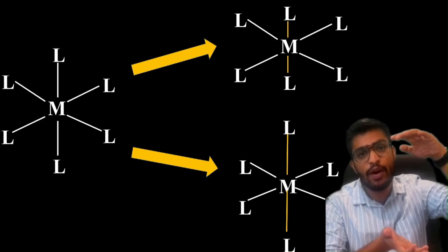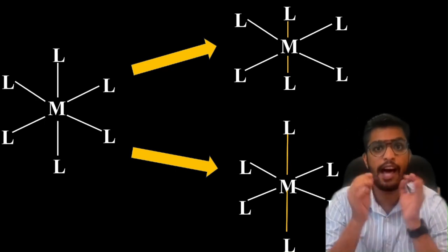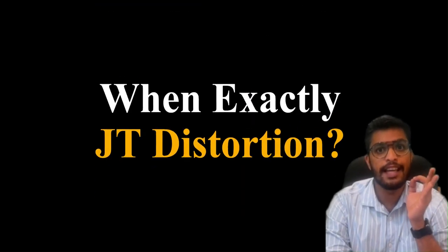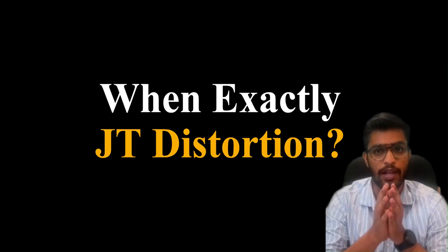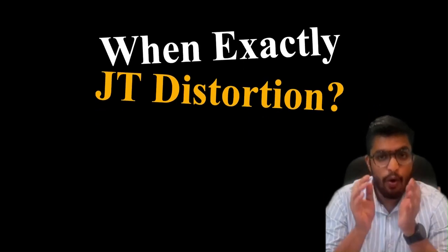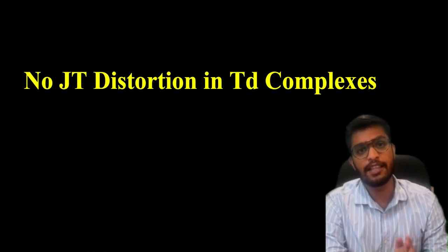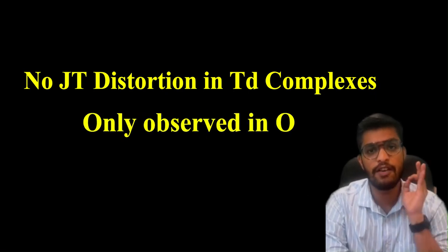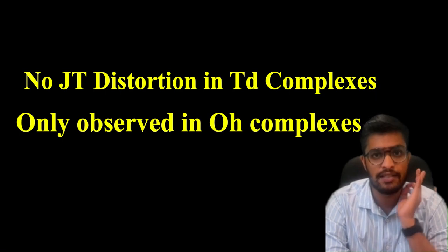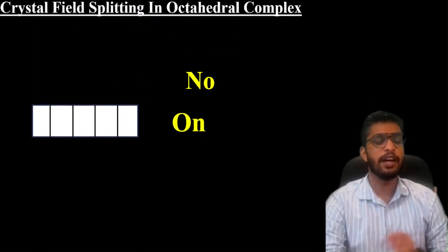This is actually Jahn-Teller distortion. So the next question: exactly when is the Jahn-Teller effect given in a molecule? We can observe the Jahn-Teller effect in octahedral complexes - we can only observe this in octahedral complexes.